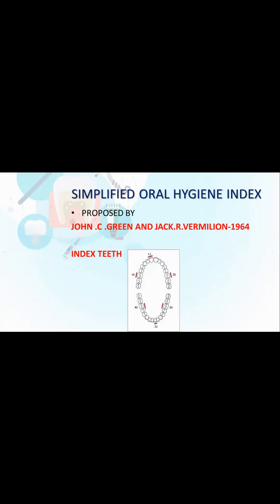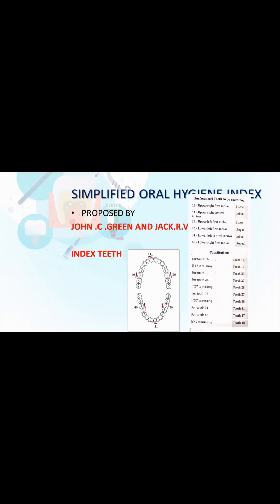This index was proposed by John C. Green and Jack R. Vermillion in the year 1964. We record only certain teeth: 16, 11, 26, 36, 31, and 46, which we call index teeth. In the upper arch, all labial or buccal surfaces are recorded. In the lower arch, the lingual surfaces of the posteriors 46 and 36 are recorded, and the labial surface of 31 is recorded. If these index teeth are not present, substitution teeth — the next teeth present — are used.